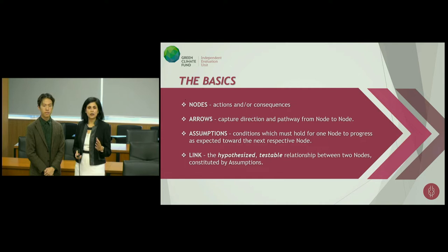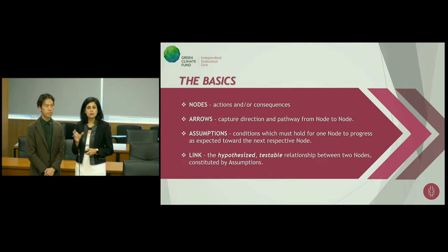The third are assumptions — conditions that must hold from one node to progress to the other node as we would expect. And last but not least, we have what are called links. This is the hypothesized, testable relationship between two nodes that are informed by assumptions. These are important because as we gather new evidence, they help to inform each one of these links.